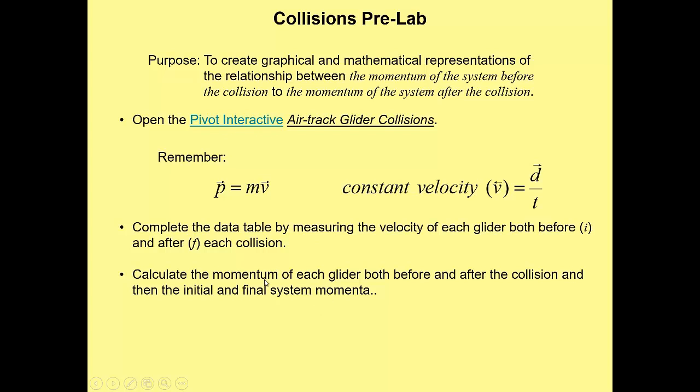So you're going to calculate the velocities, put them into the table. The next table is going to have you calculate the momentum of each glider, which is really just taking the velocity and multiplying by the mass. Keep the positive or negative though. That's not a problem. Then you're going to calculate the initial and final system momenta. How are you going to do that? Well, you're going to add the two initial momentums, that would be the left cart initial and the right cart initial is the total initial. The left cart final and the right cart final is the final momentum. Do you know what I mean?